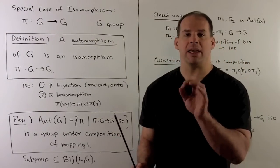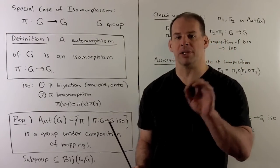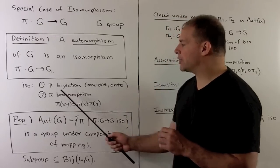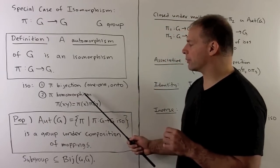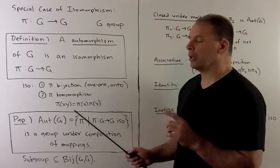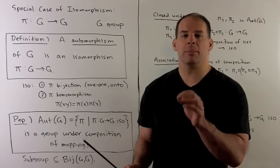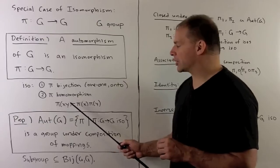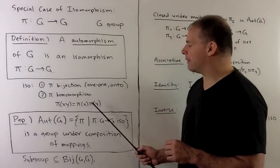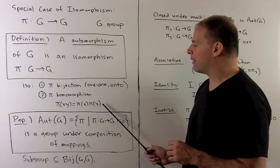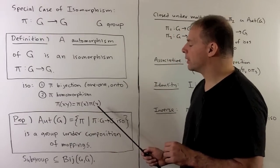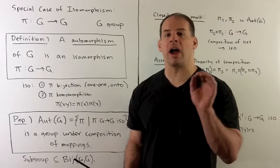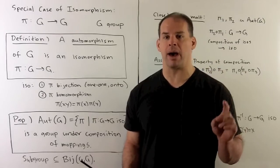So that means pi gives us an equivalence of sets. Then we have pi as a homomorphism, which means pi preserves the multiplication: pi(xy) = pi(x) times pi(y). So it doesn't matter if we multiply before or after we apply pi.